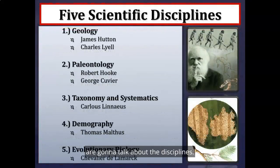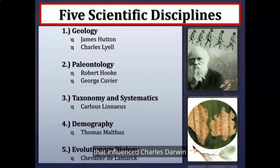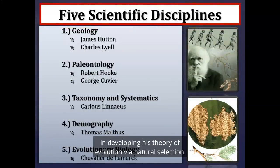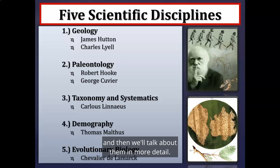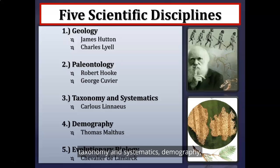The next few slides discuss the five scientific disciplines that influenced Charles Darwin in developing his theory of evolution via natural selection: geology, paleontology, taxonomy and systematics, demography, and evolutionary biology.